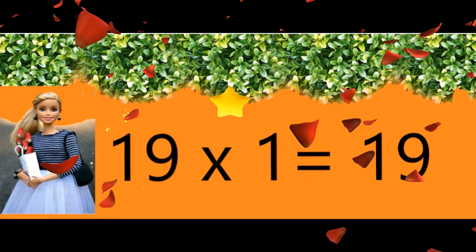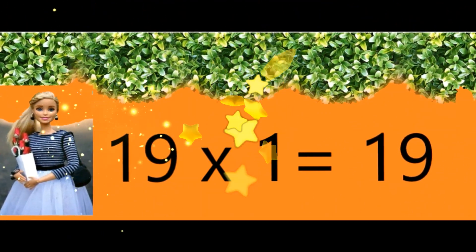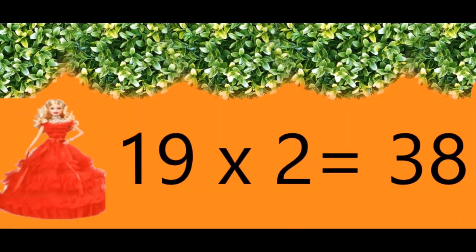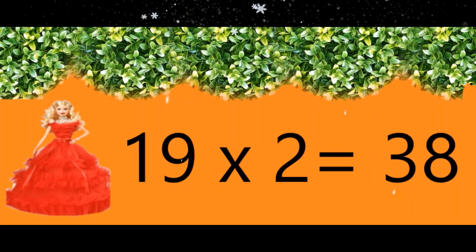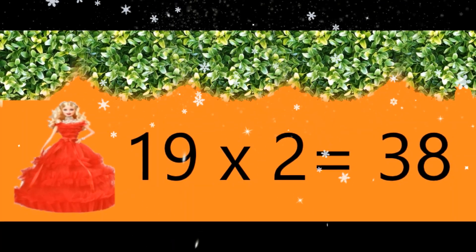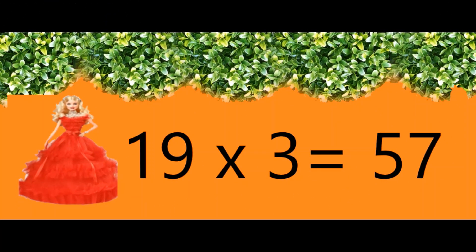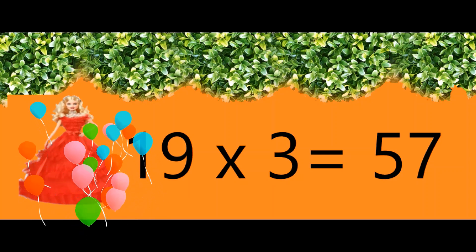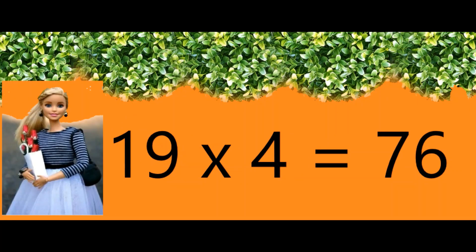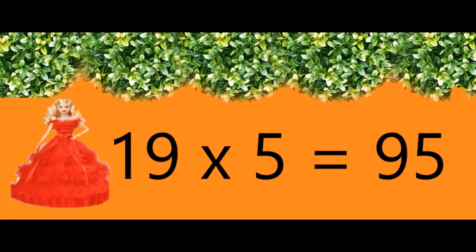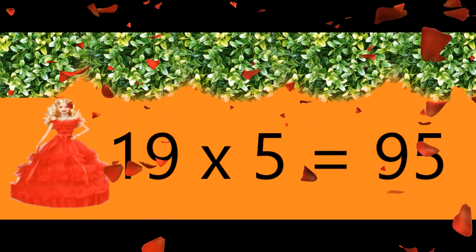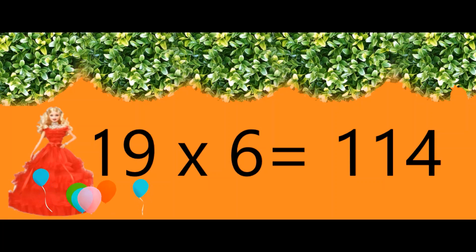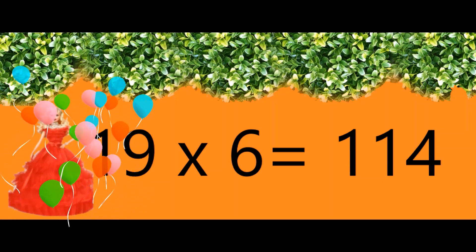Nineteen ones are nineteen. Nineteen twos are thirty-eight. Nineteen threes are fifty-seven. Nineteen fours are seventy-six. Nineteen fives are ninety-five. Nineteen sixes are one hundred and fourteen.